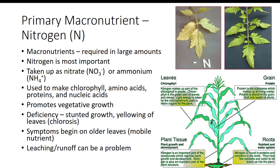Nitrogen is one of the most widely used elements for plant nutrition. Nitrogen is taken up by the plant as nitrate or ammonium, and is used by the plant to make chlorophyll, amino acids, proteins, and nucleic acids. Vegetative growth is promoted by nitrogen fertilization. If applied improperly, this can result in delayed maturity leading to a reduction in crop yields. Deficiency symptoms include stunted growth and/or yellowing of leaves or chlorosis, which is the result of poor chlorophyll development or destruction of chlorophyll caused by mineral deficiency or pathogen attack. Chlorotic symptoms begin on the older leaves located at the lower portion of the plant and then progressively spread throughout the plant as the deficiency becomes worse.